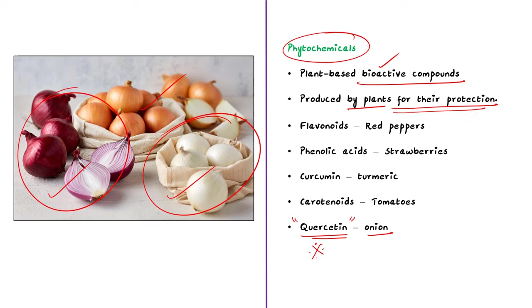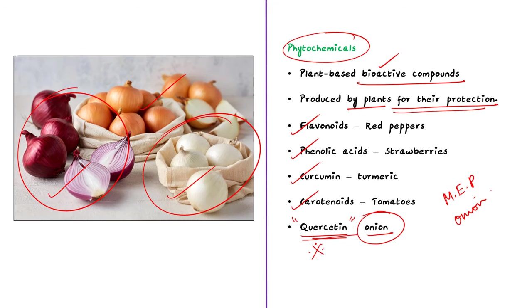A few examples of phytochemicals are flavonoids, phenolic acids, curcumin and carotenoids. Onion also contains the phytochemical quercetin. In this discussion, we covered the basics about minimum export price and important onion producing states. Now we shall move to the next topic.